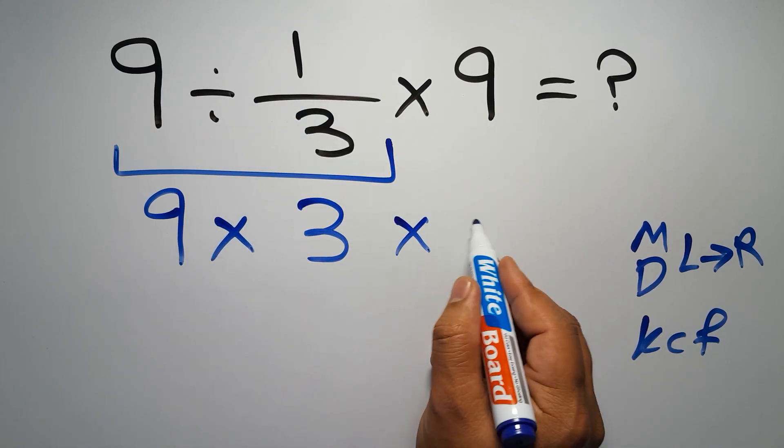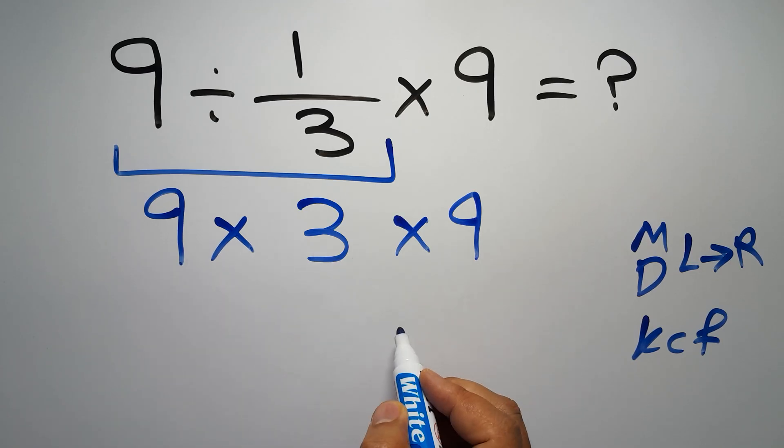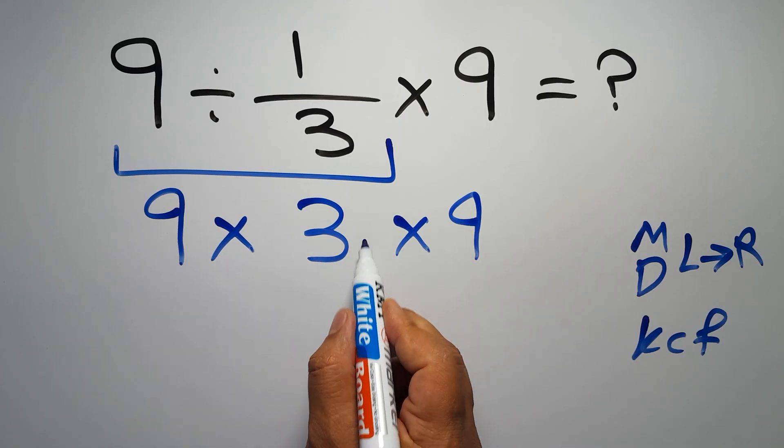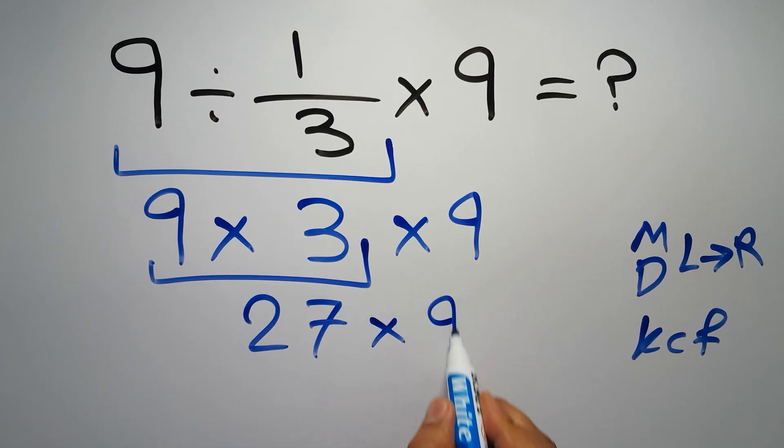And here we have times 9. So 9 times 3 times 9. 9 times 3 gives us 27. So 27 times 9.